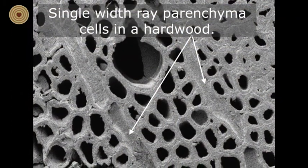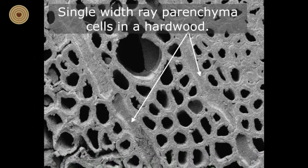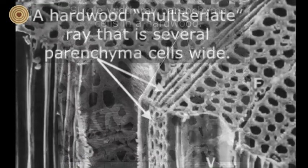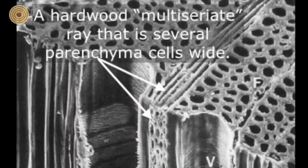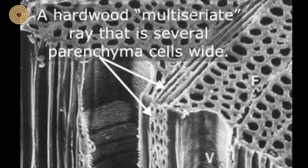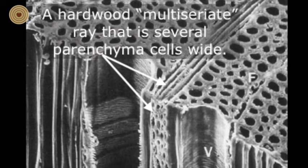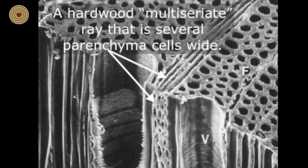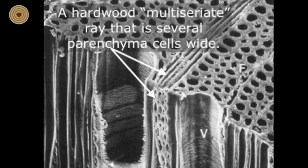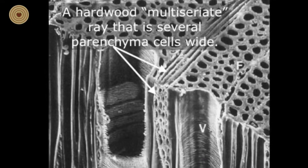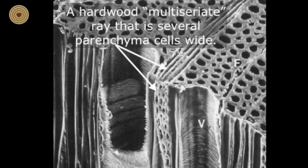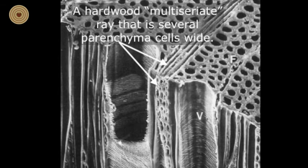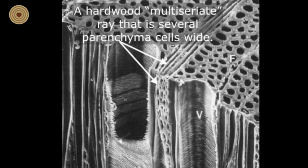Some rays in hardwoods may be only a single cell wide, but the rays in some hardwood species can also be quite wide. On a tangential surface such as this one, you can see hardwood rays that are many cells wide. These are called multiseriate rays, and they are found, for example, in species such as oak, beech, and ash. These large multiseriate rays provide some of the unique figure to wood at the macro level in furniture. If the wood is cut along these rays, the appearance of finished wood products can often be quite striking.